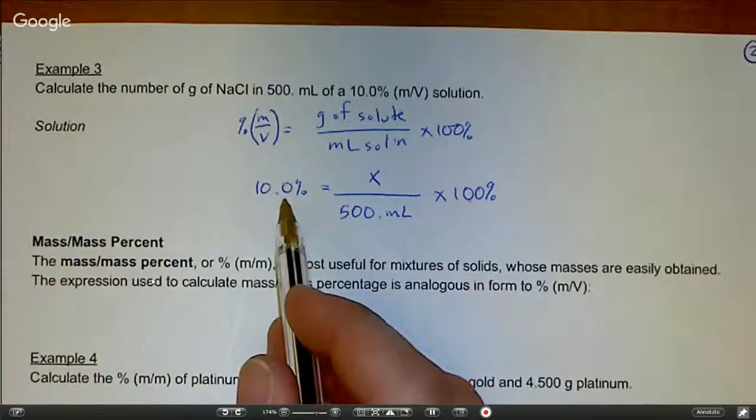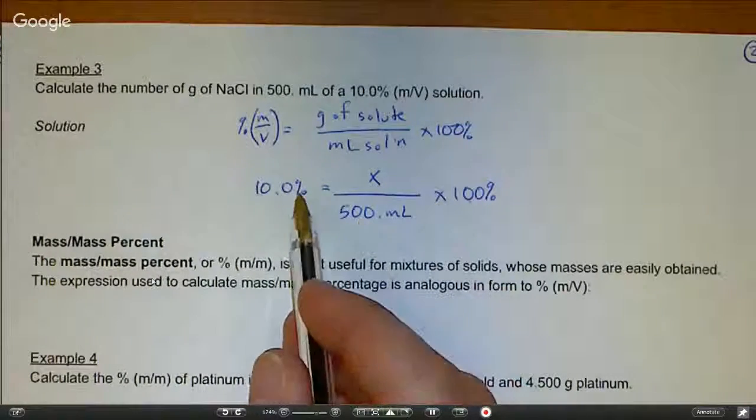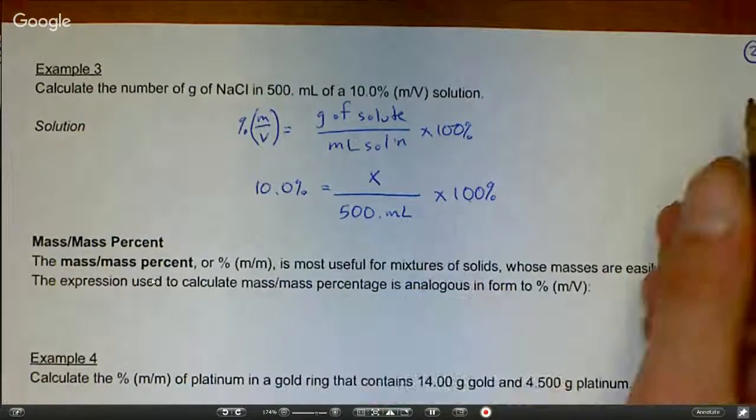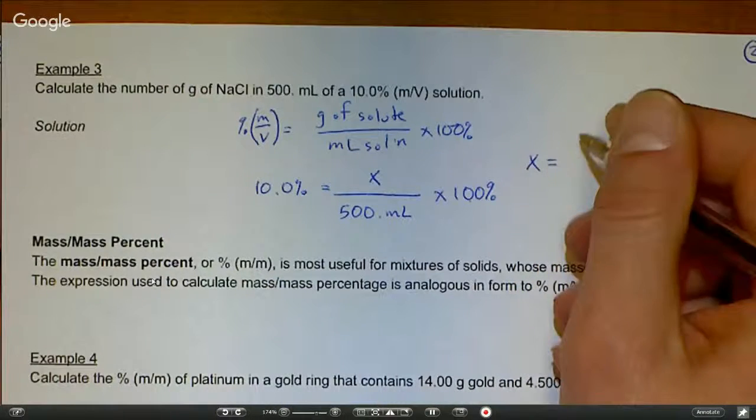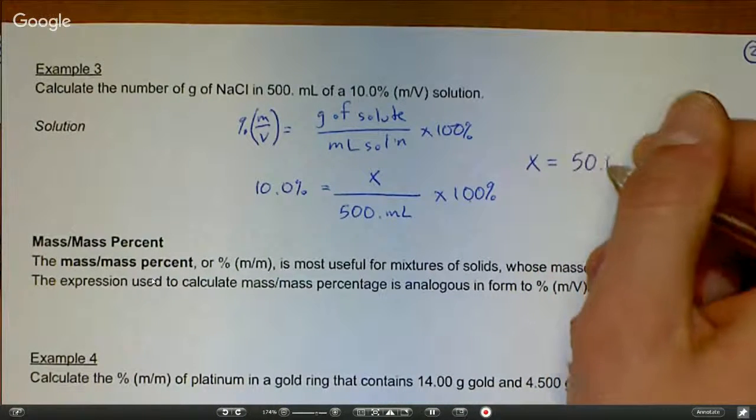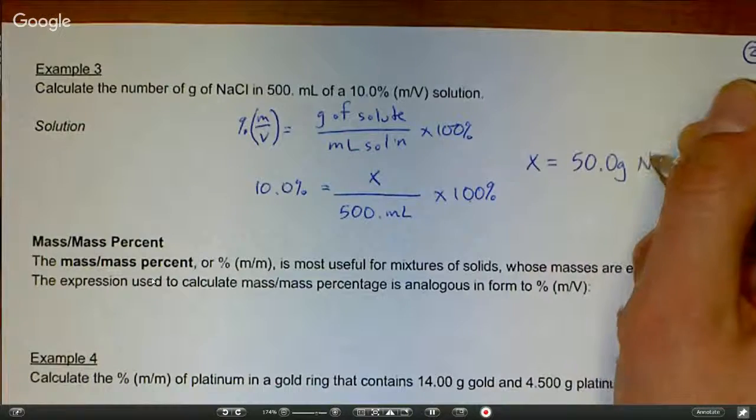We'll do some rearranging. Divide both sides by 100 and then multiply both sides by 500. When we do that, what we get for x is 50 grams of sodium chloride.